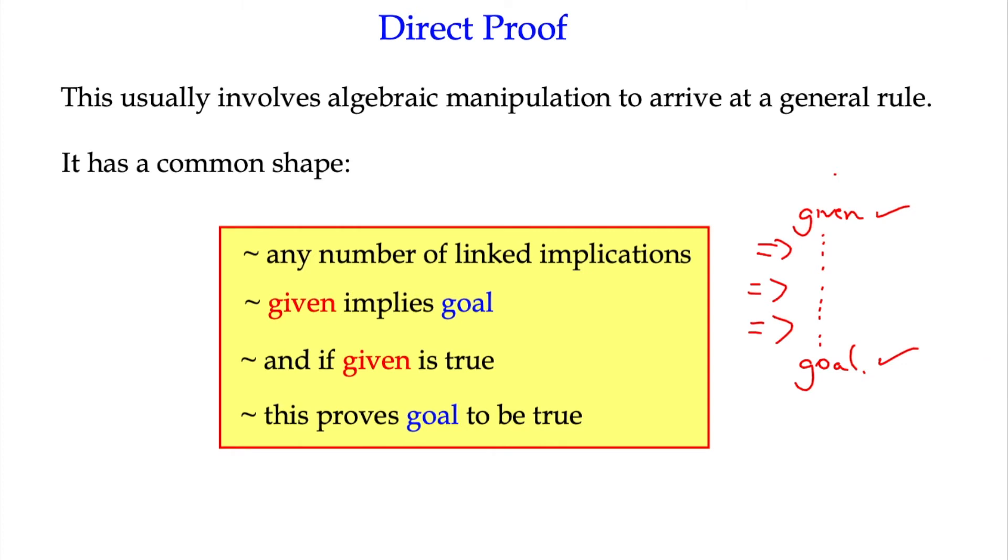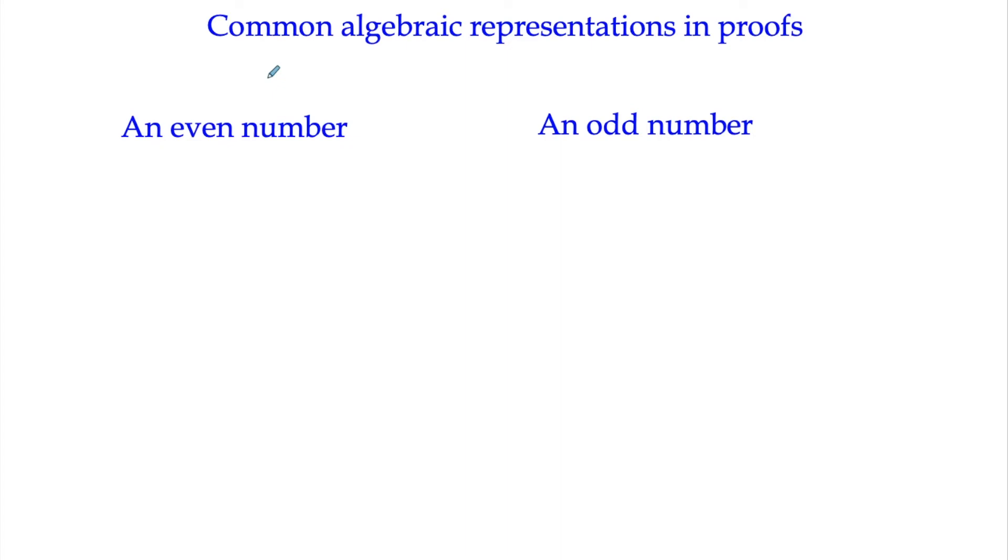Before we do the first example of it, I just want to add a little bit about some common representations. We're going to look at conjectures that often involve odd and even numbers, even numbers, consecutive integers and stuff. So I want a quick reminder, you may already be familiar with this. How do we represent an even number algebraically?